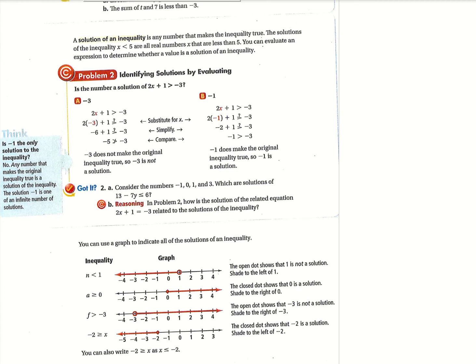So we have here: a solution of an inequality is any number that makes the inequality true — that's the main thing you need to remember. For example, the solutions of the inequality x is less than 5 are all real numbers x that are less than 5. One example would be like 1. If x equals 1, that makes the statement true, so 1 would be a solution to that inequality.